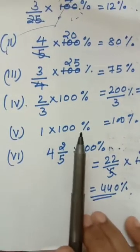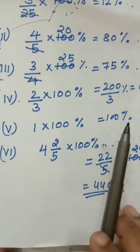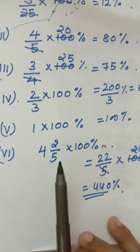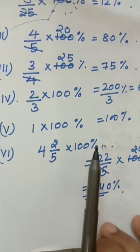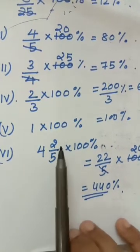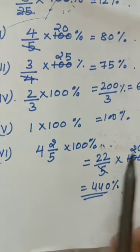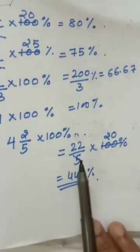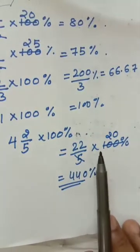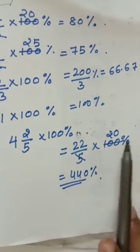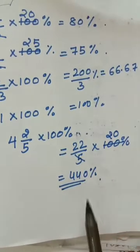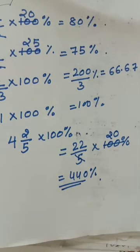1 multiplied by 100 percentage is 100 percentage. 4 and 2 by 5 multiplied by 100 percentage: convert this mixed number into improper fraction, that is 22 upon 5 multiplied by 100 percentage. Cut out: 20 multiplied by 22 gives 440 percentage.